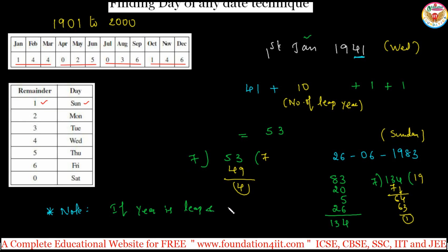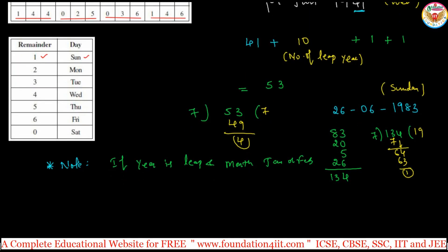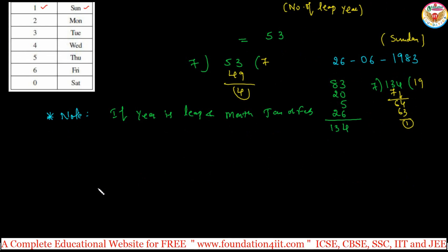This is the exemption case: if year is leap year and the month must be either January or February. Let us take one example: 10th February 1948. 48 is a leap year, exactly divisible by 4, and the month is February. Same process, but finally reduce one number.